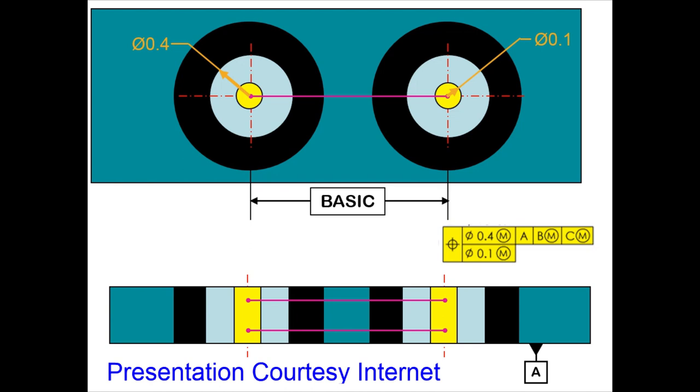Here we have an example wherein a feature control frame with two levels and a single geometrical tolerance. In this case, it is positional tolerance.